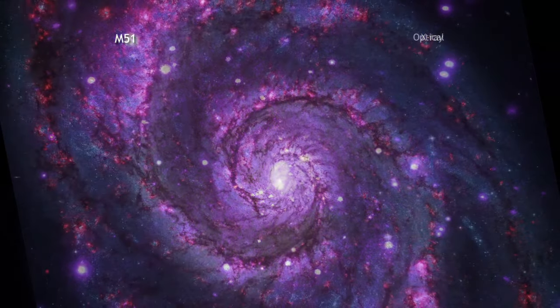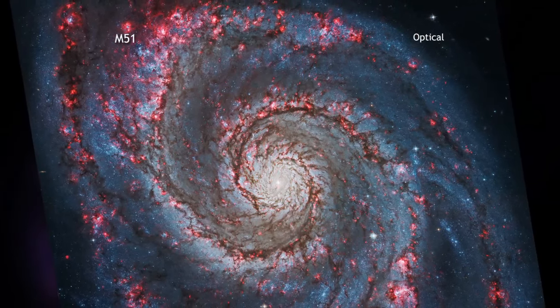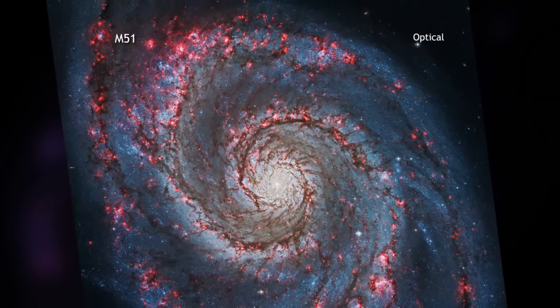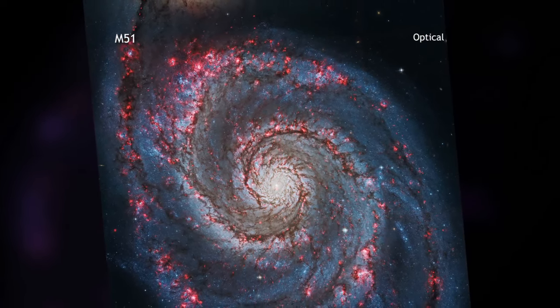These data reveal over 400 X-ray sources within the galaxy. Most of these are so-called X-ray binary systems, in which a neutron star or black hole is in orbit with a star like our Sun.